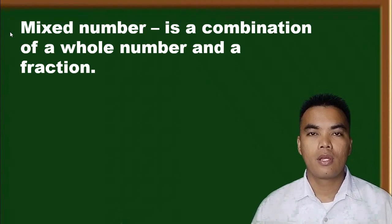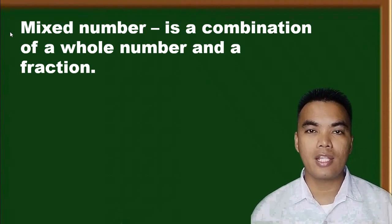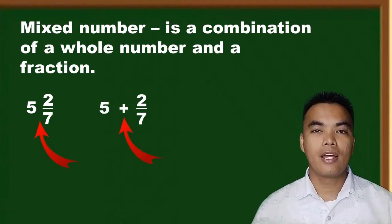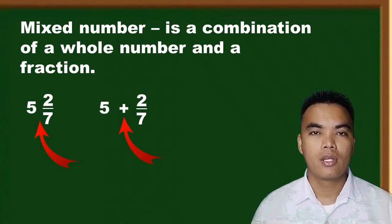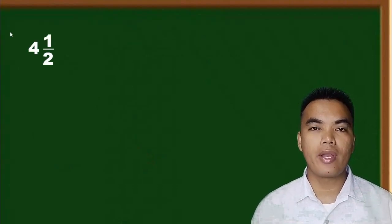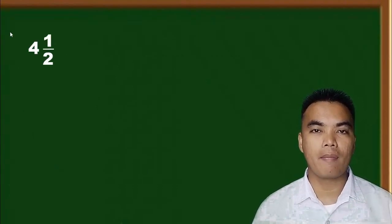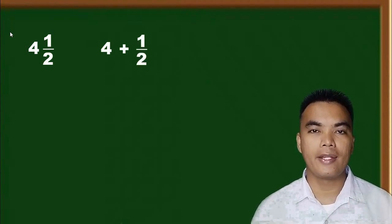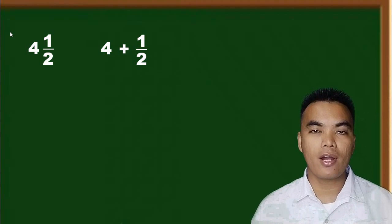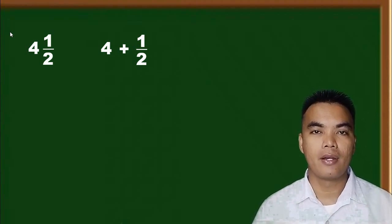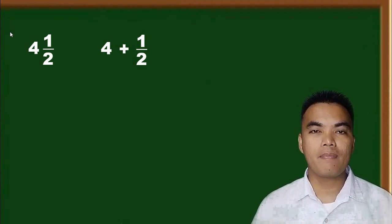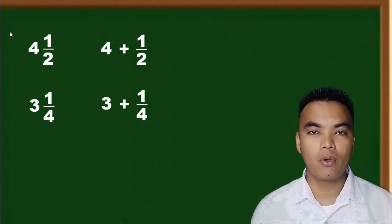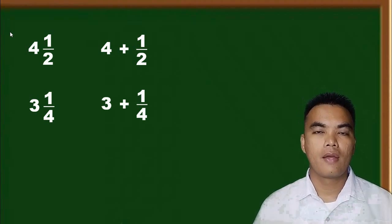It's important to know that even though a plus symbol doesn't appear between the two parts of a mixed number, they are still being added together. For example, four and one half is the same as four plus one half — you just add the whole number with the fraction. Another example is three and one fourth, which is three added to one fourth.